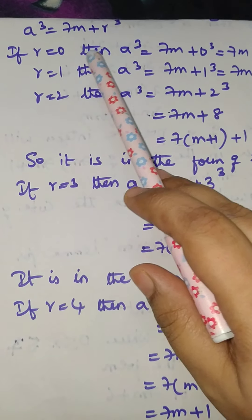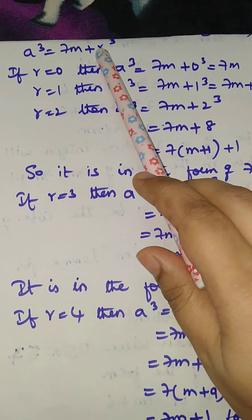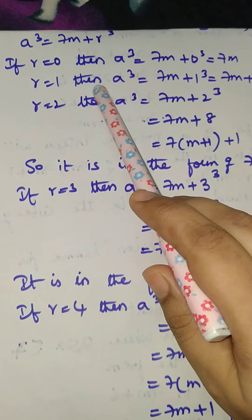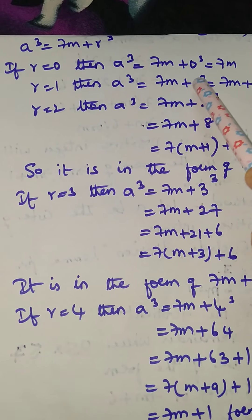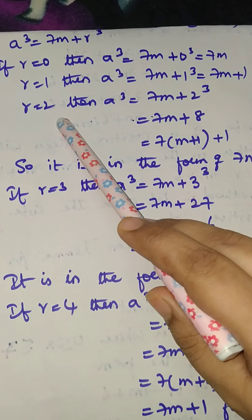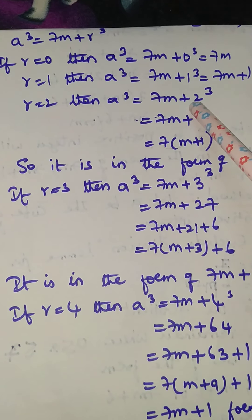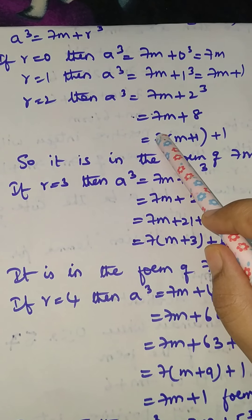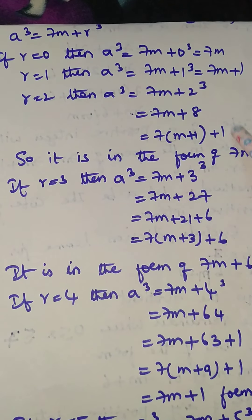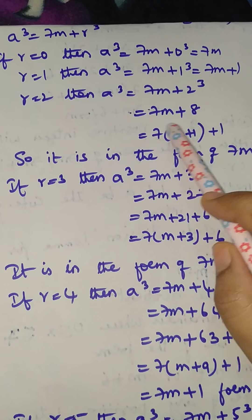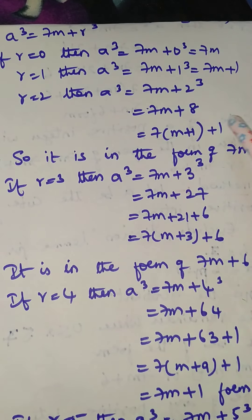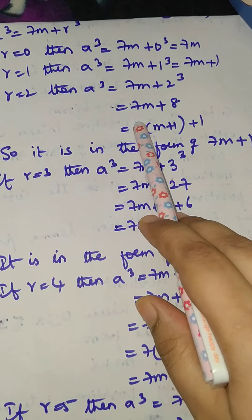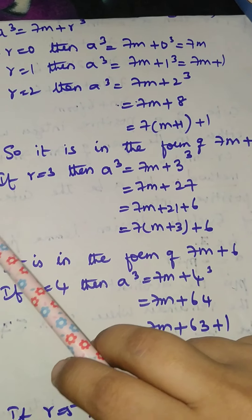Now again, if r equals 0, then a cube equals 7m plus 0 cube equals 7m. If r equals 1, then a cube equals 7m plus 1 cube equals 7m plus 1. If r equals 2, then a cube equals 7m plus 2 cube. 2² is 4, 4 times 2 is 8. Taking 7 common: 7 into m plus 1, plus 1, which gives 7m plus 1.